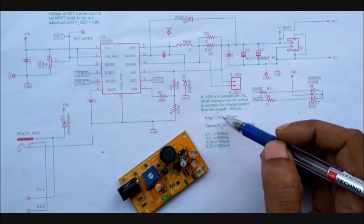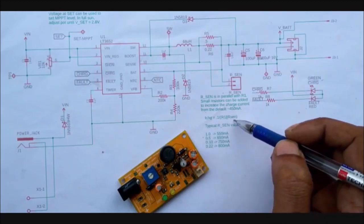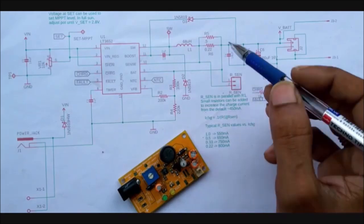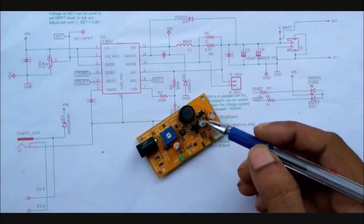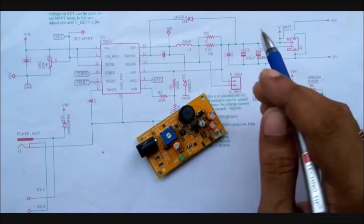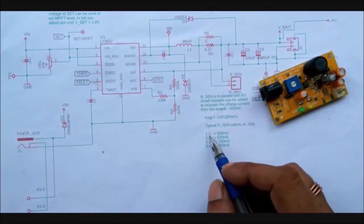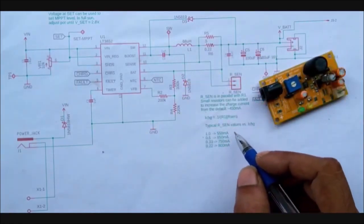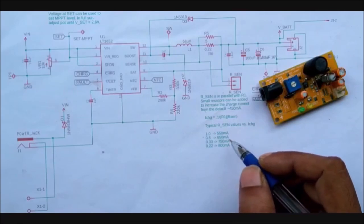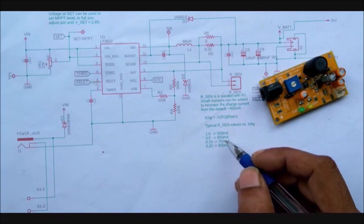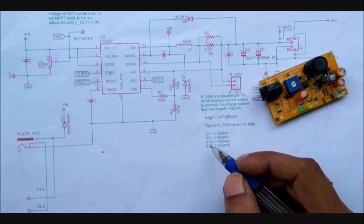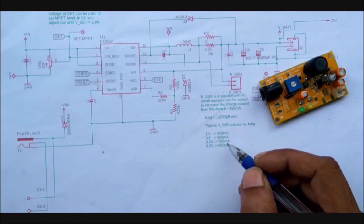So we have our R sense resistor over here on the circuit and on the board you can see it over here. So by changing the value of this R sense resistor like if we use 1 ohm the charging current will be 550 milliamps. If we use 0.5 ohms it will be 650 milliamps and 0.33 ohms for 750 milliamps and 0.22 ohms for 800 milliamps of charging current.